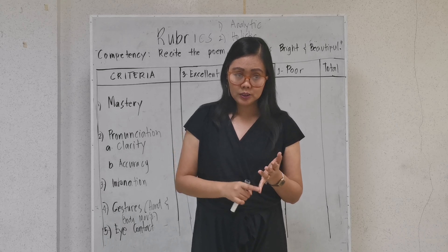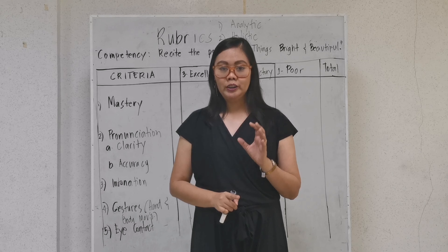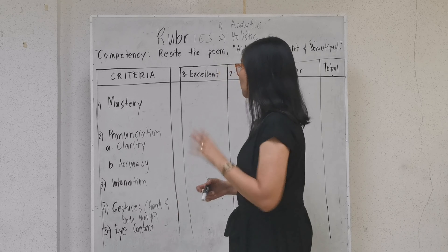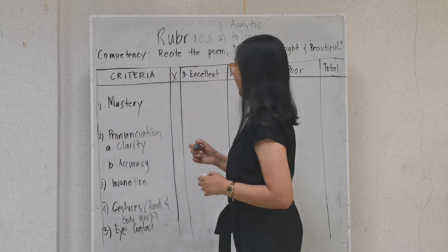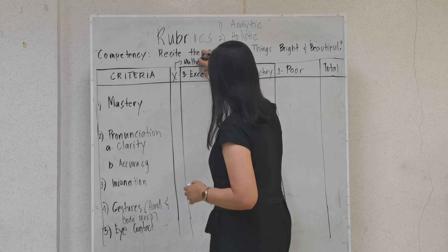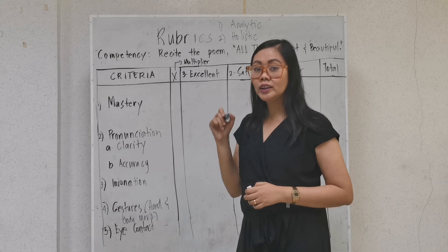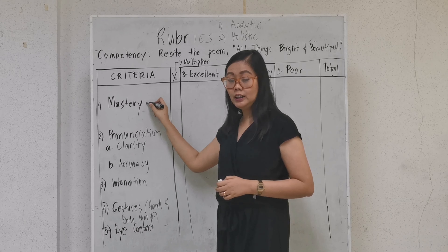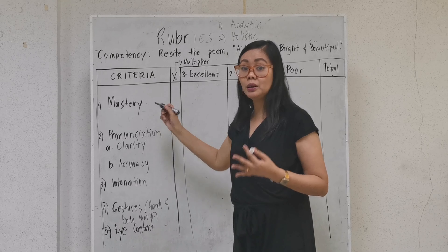There are two essential parts — criteria and level of performance — but in the analytic rubric there are additional distinct parts. One is the multiplier, represented by X. We will later see that this multiplier is used to determine the scoring weight or percentage assigned to each skill or criteria. It could be 20%, a multiplier of 6, or 30% — depending on your decision.